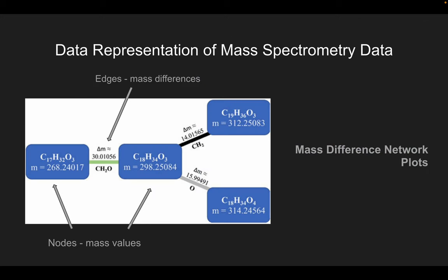Lastly, mass difference network plots use the mass values as nodes of the network and are connected at the edges, which signify the mass differences. Thus, these plots tell us about the relationships between different molecular species using their mass differences as a point of comparison, giving us vital information about the type of chemical transformations involved.